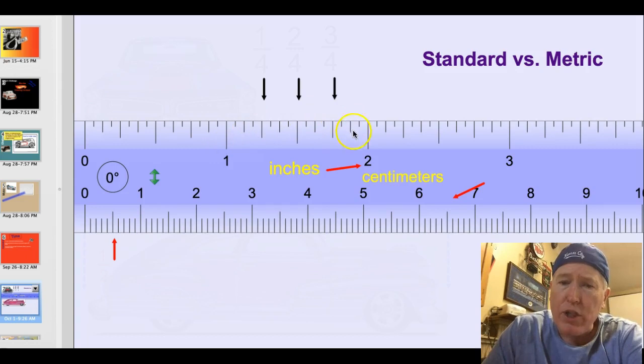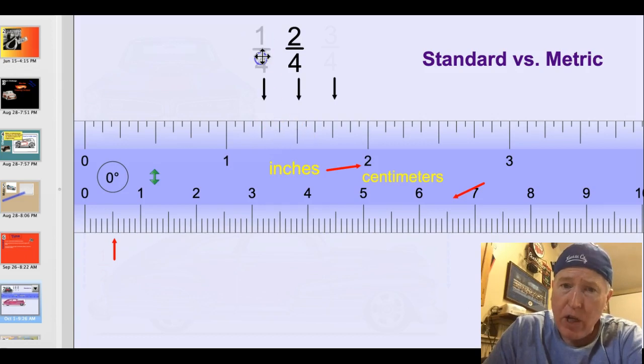So if you look between one and two inches here, this longest line here will be the one-half or the two-fourths inch mark. And the next longest line which is exactly halfway between the one and the one-and-a-half mark would be the one-and-one-fourth inch mark. So the quarter inch mark, the two-fourths or one-half inch mark, and of course between two-fourths and two here would be the one-and-three-fourths inch mark.